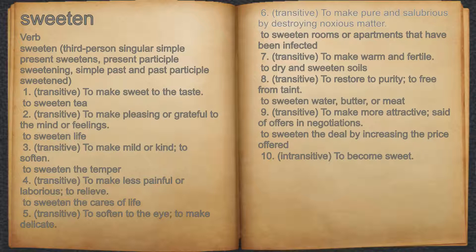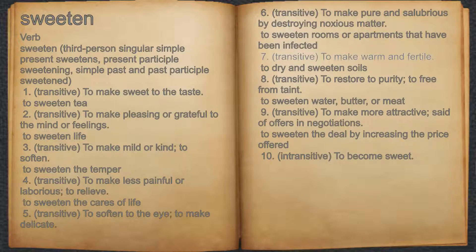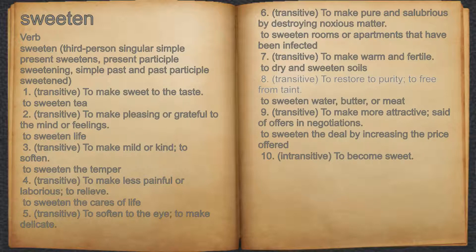Five, transitive: to soften to the eye, to make delicate. Six, transitive: to make pure and salubrious by destroying noxious matter — for example, to sweeten rooms or apartments that have been infected.